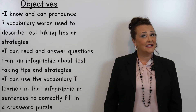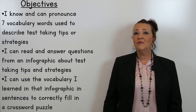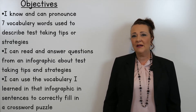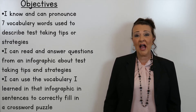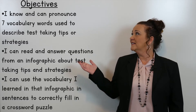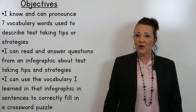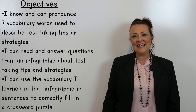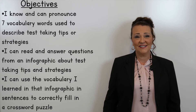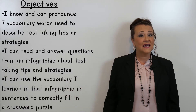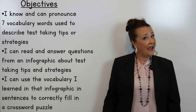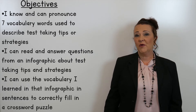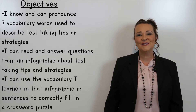The first objective says: I know and can pronounce seven vocabulary words used to describe test-taking tips or strategies. The second objective says: I can read and answer questions from an infographic about test-taking tips and strategies. And the last objective says: I can use the vocabulary I learned in that infographic in sentences to correctly fill in a crossword puzzle.